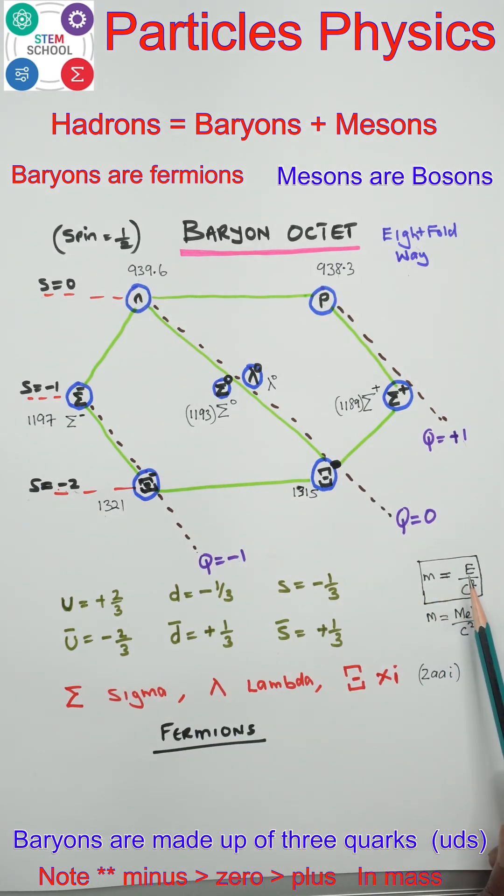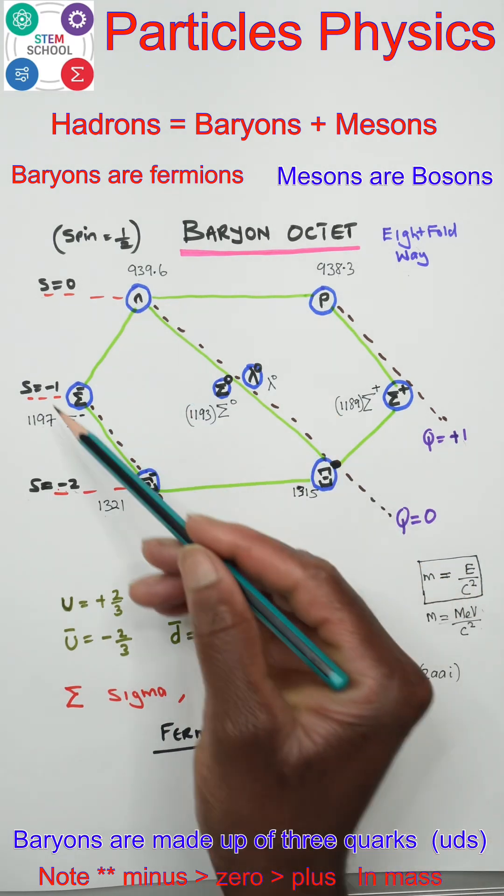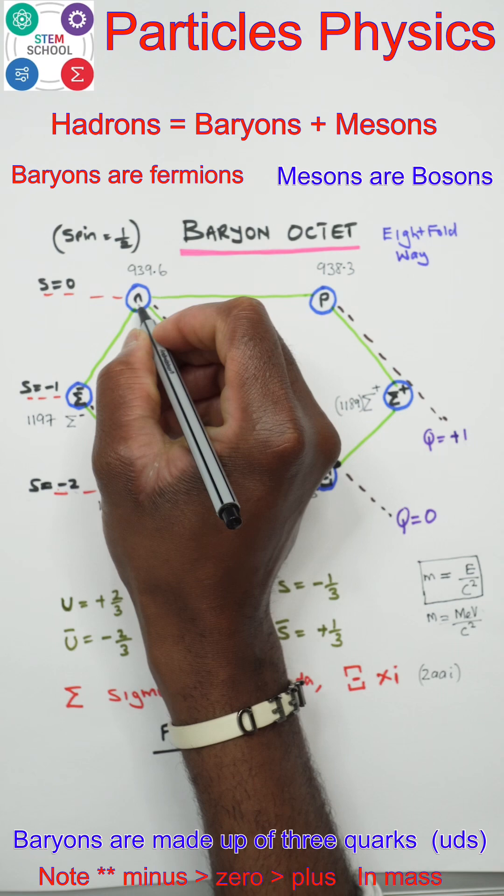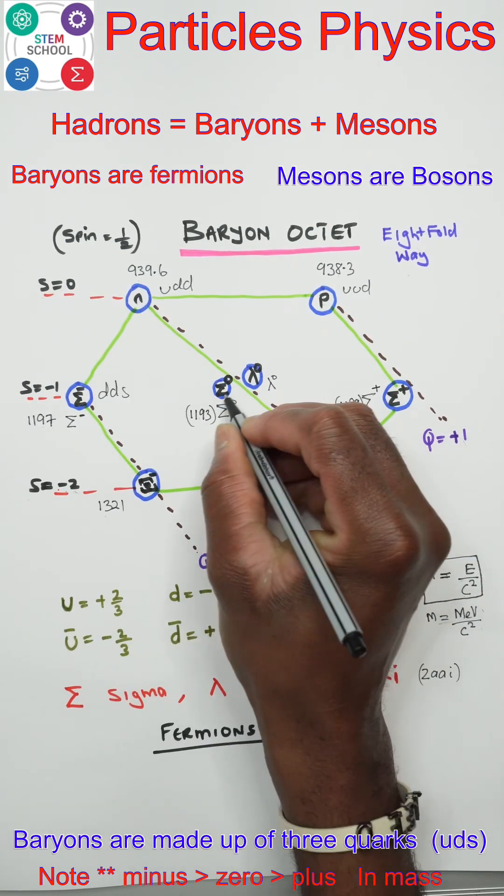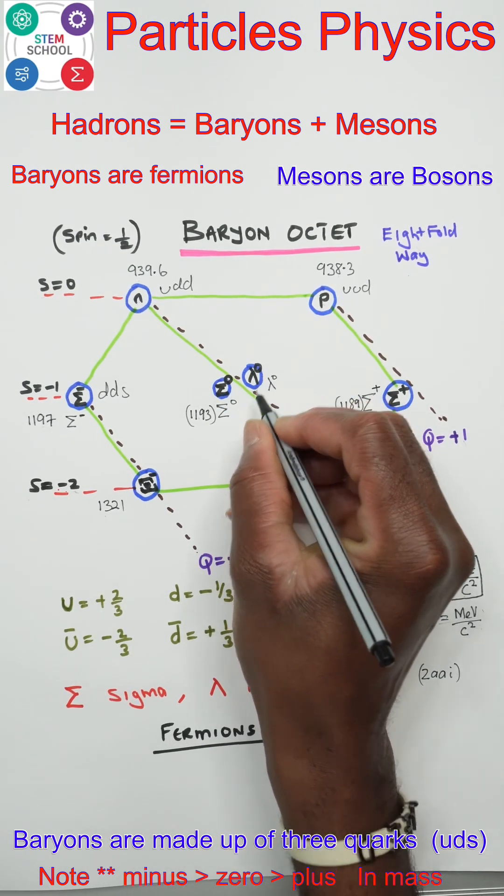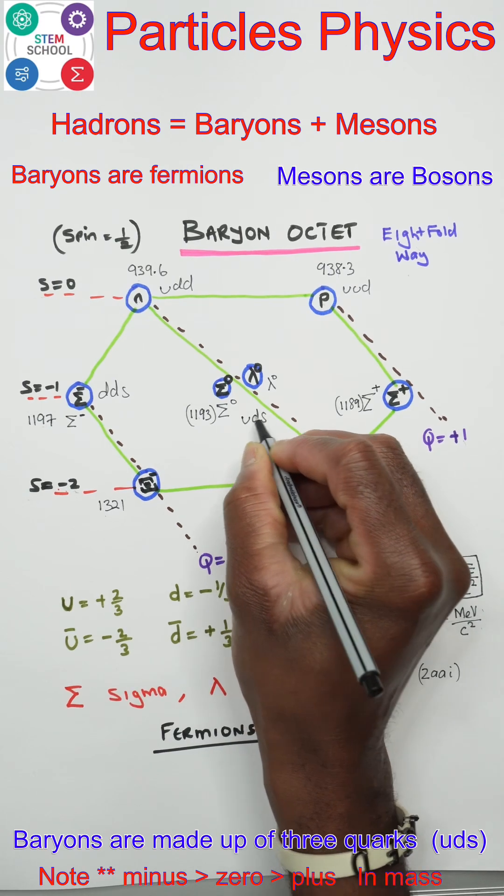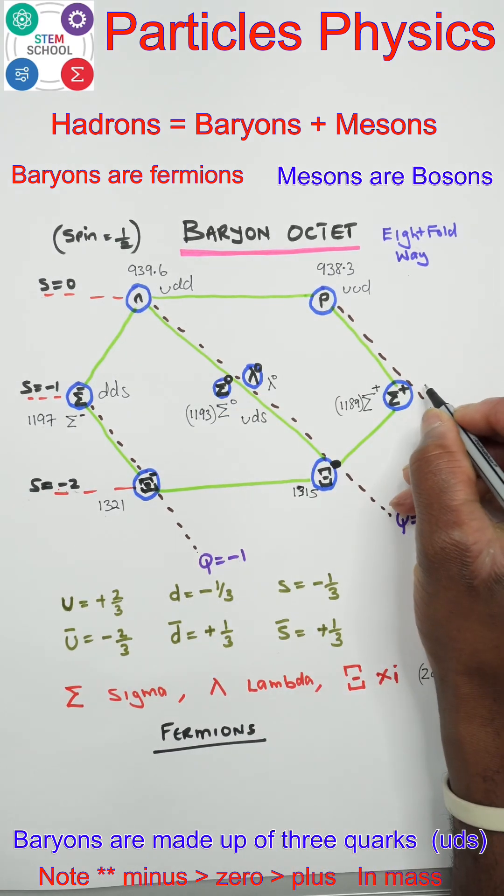in energy over c squared. The unit is mega electron volts over c squared. Eight of them in hexagonal shape: neutrons, protons, sigma minus, sigma zero, lambda zero. U, D, S quarks. Sigma plus